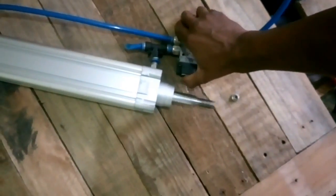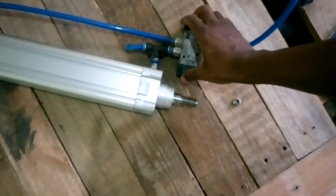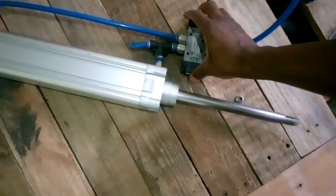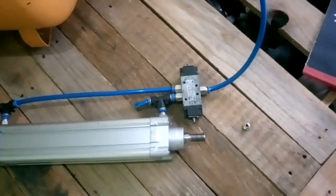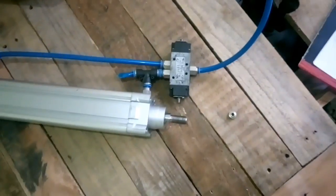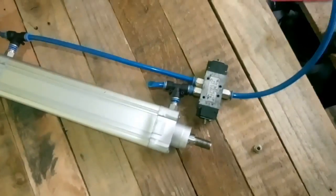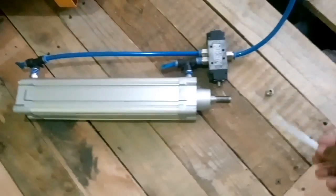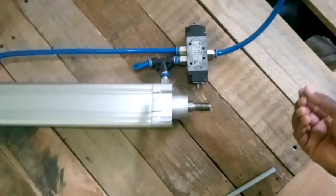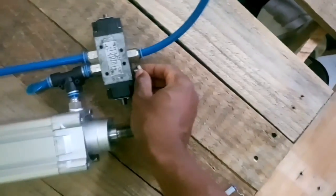So you can tell here that the cylinder is retracting and extending at the same speed because we've removed the restrictor here. But with the restrictor in, let me try once more.